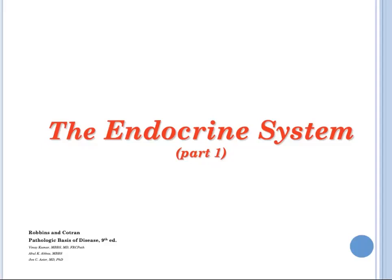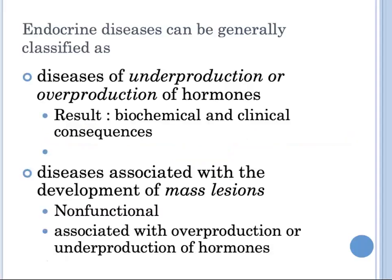Hello class, we will now have the first of two parts of our lecture on the endocrine system. Signaling by secreted molecules can be classified into three types based on the distance over which the signal acts: autocrine, paracrine, or endocrine. In autocrine, the secreted molecule targets itself; in paracrine, it targets a nearby or neighboring cell; while in endocrine, the secreted molecules — also known as hormones — act on target cells that are distant from their site of synthesis.